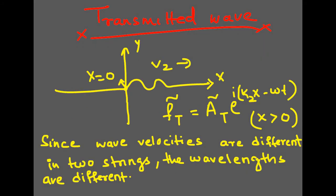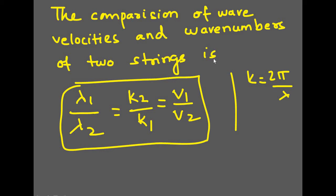The transmitted wave enters a new medium, analogous to light passing through glass. It has new velocity v2 and wave number k2. The transmitted wave equation is f_t equal to A_t times e raised to i(k2*x minus omega*t), for x greater than 0. Both incident and transmitted waves move in the same direction. Since wave velocities are different, the wavelengths are also different. The relation is lambda1/lambda2 equal to k2/k1 equal to v1/v2, since omega equals k*v, giving k1*v1 equal to k2*v2.